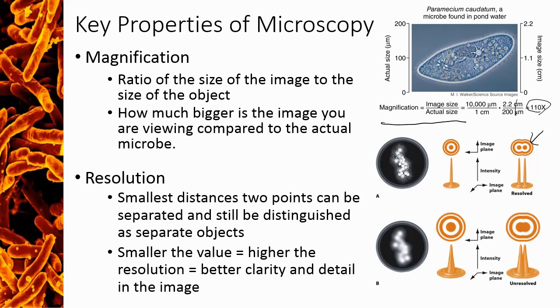So we can see resolution here in the image. Here we have two dots that are a certain distance away from each other. If that distance away is larger than the resolution of the microscope, then we can see them as separate points, and we get a nice clear image.